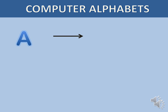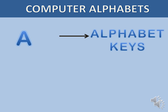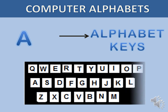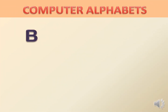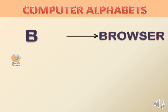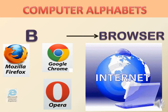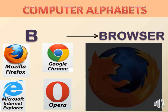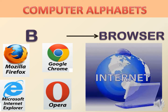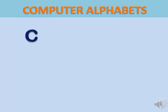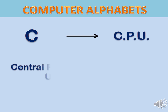A — Alphabet Keys. B — Browser. C — CPU, Central Processing Unit.